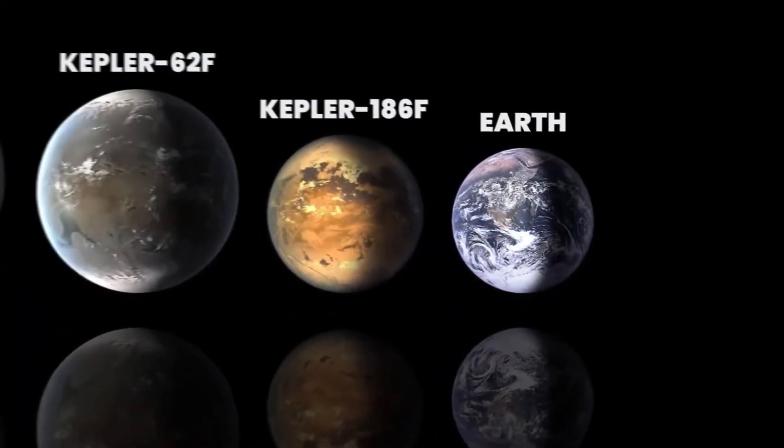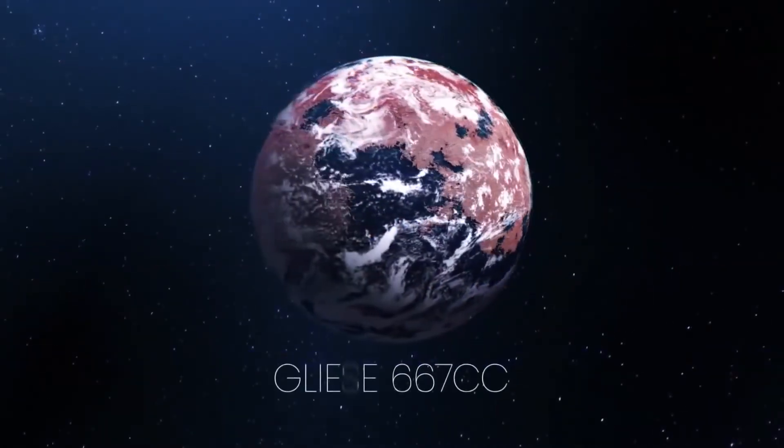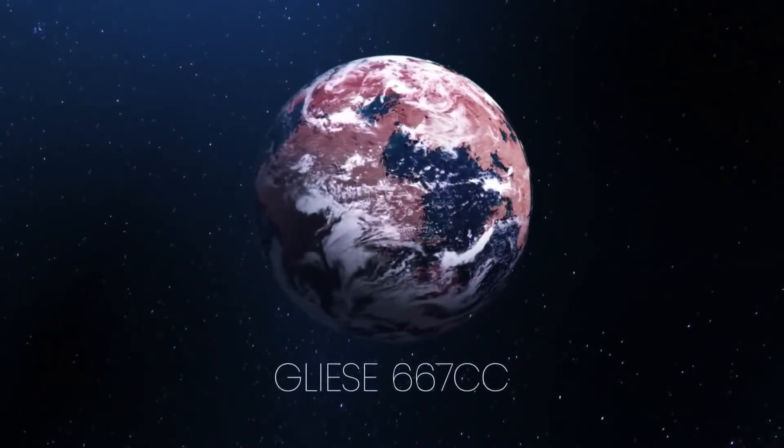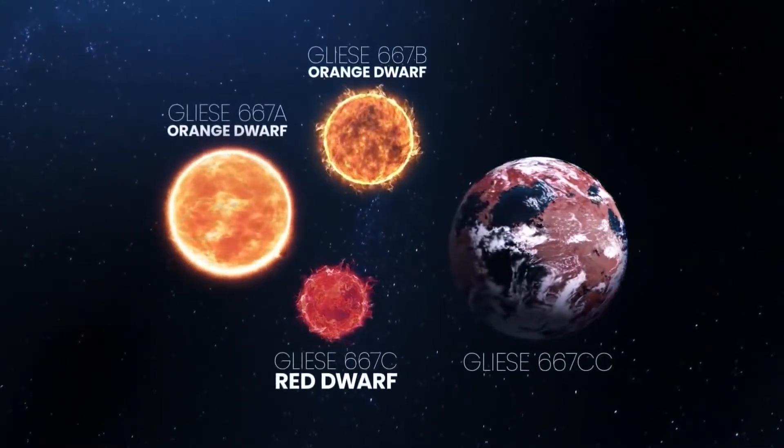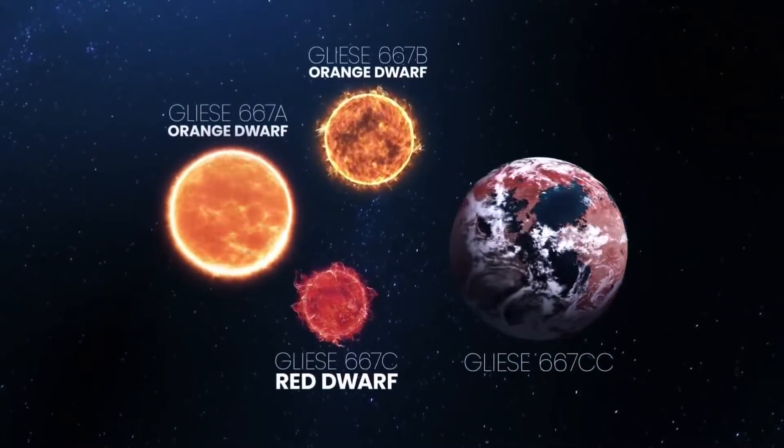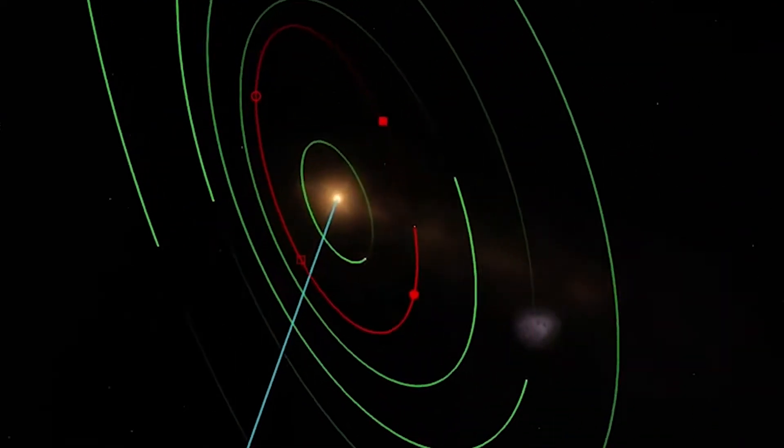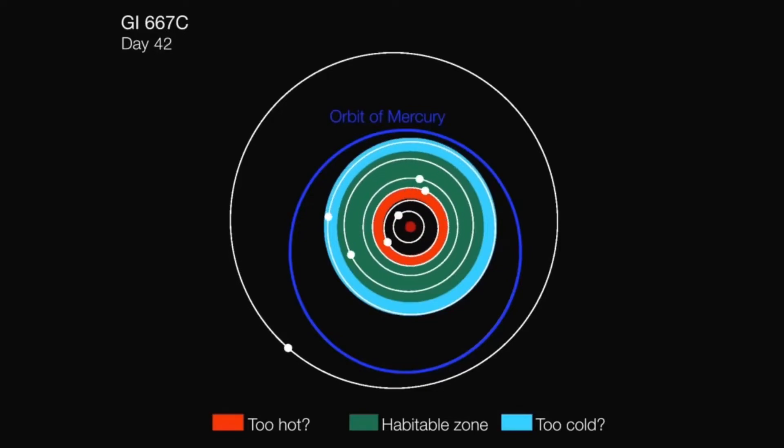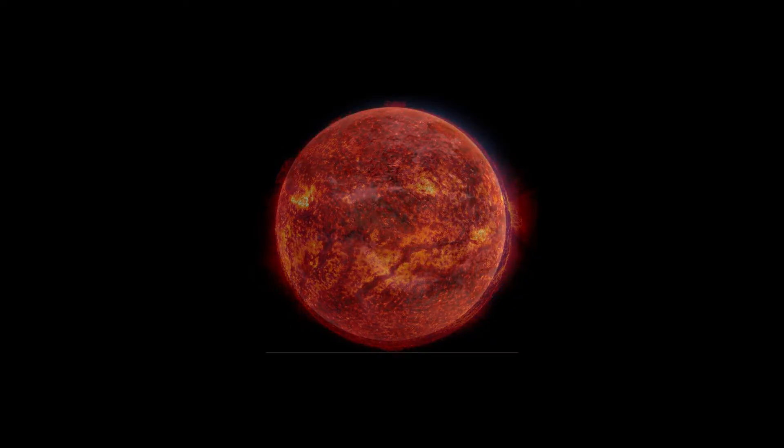Here are the 10 planets that look like Earth and may be habitable. Number one, Gliese 667 CC. According to NASA's Jet Propulsion Laboratory, this exoplanet is at least 4.5 times as big as Earth and is only 22 light-years away. Although Gliese 667 CC completes one orbit of its host star in just 28 days, the exoplanet is believed to be in the habitable zone because its star is a red dwarf that is much cooler than the Sun.